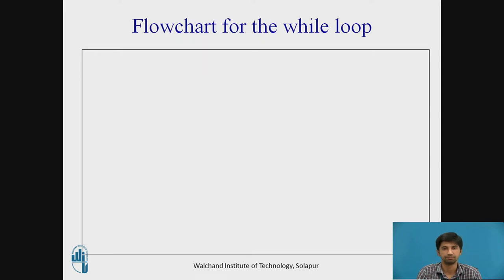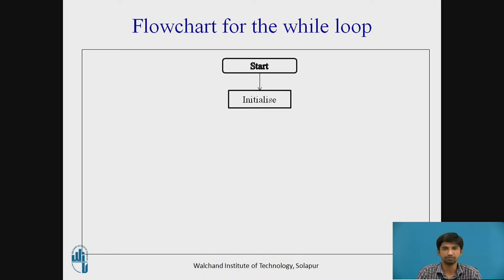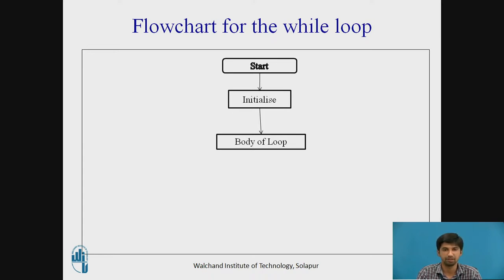Now, the flowchart for the do-while loop. Start is from where the execution of the program begins. Then the initialize phase — initialize means you are giving the initial values. Then the body of the loop — these are the statements executed after initialization. For example, if I want to find the sum of numbers, the initial value will be i = 0, or i = 1 if summing from 1 to 10. The body of the loop would be: sum = sum + i, where i increments each iteration.